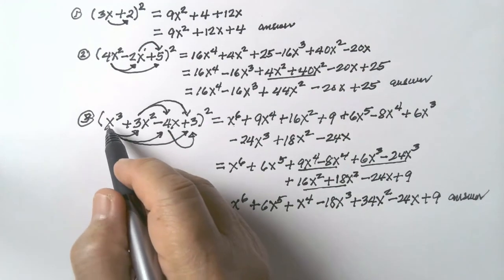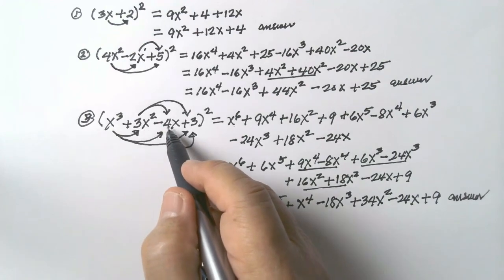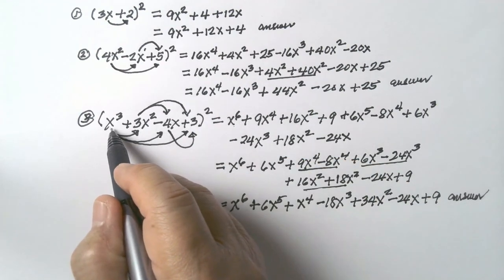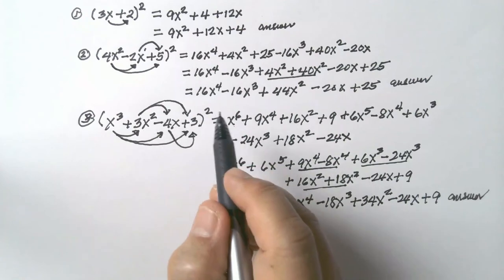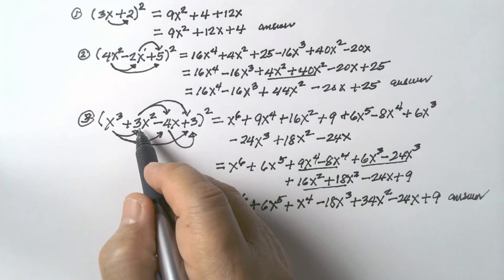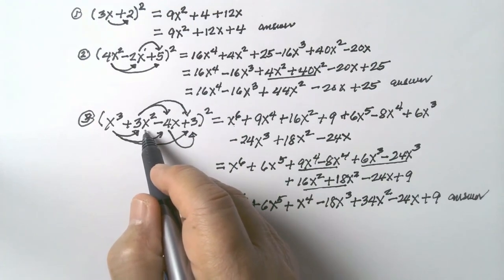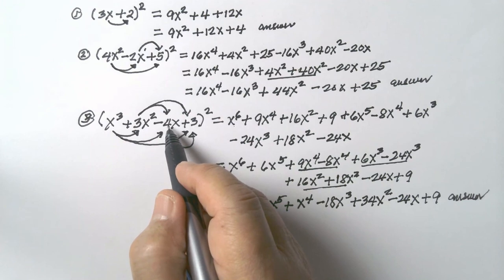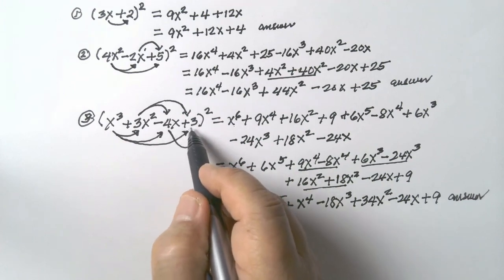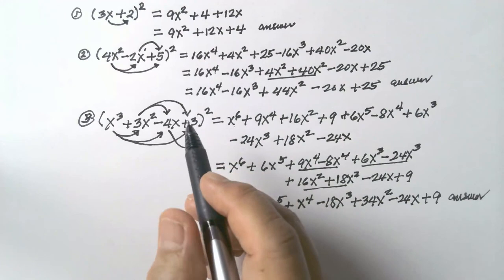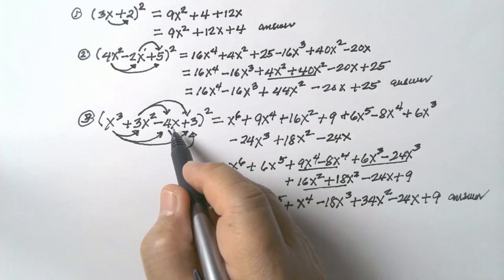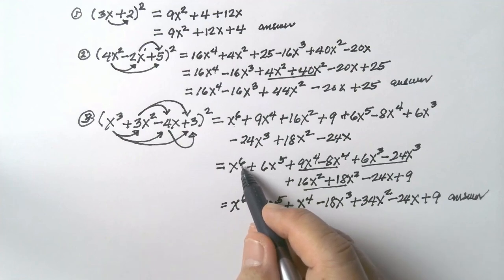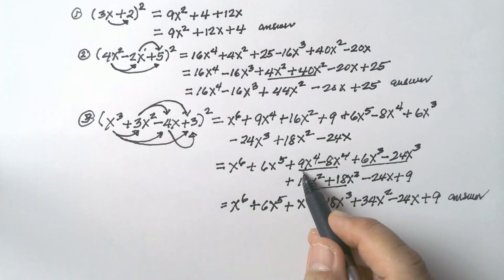The general procedure is: square the first term, square the second term, square the third term, square the fourth term — and any additional terms. Then distribute the first term to all terms on its right side, each time multiplying the result by 2. Go to the second term, distribute it to all terms on its right side, multiplying by 2 each time. Continue to the next term. Stop after distributing the second-to-last term. Arrange terms with exponents in descending order, then combine any like terms.